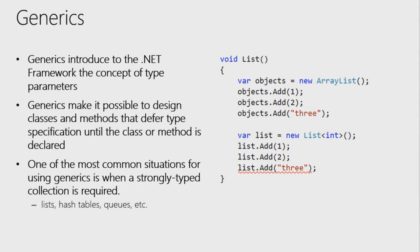Before generics, ArrayList was just a list of objects — since everything inherits from object, you could put absolutely anything into it, including mixing integers and strings, which is dangerous. The generic List<T> is safer because it constrains the type. As you iterate through an ArrayList, you never know what you're getting — that's why generics were introduced to eliminate this type ambiguity and code bloat.